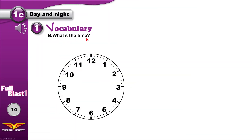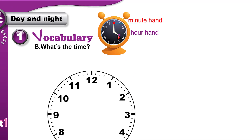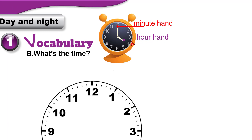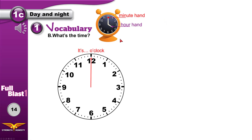What's the time? Let's learn how to tell the time. This is what we call the hour hand — the short hand. The long hand is called the minute hand. When the minute hand is exactly at 12, we say 'it's' and then we read the hour hand. For example, it's 4 o'clock.